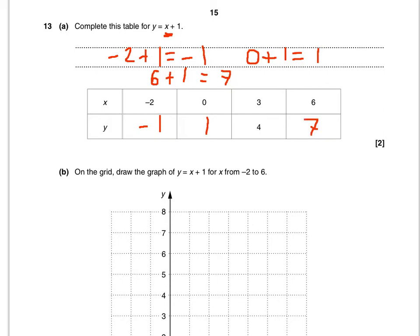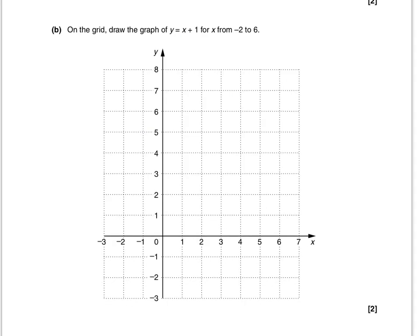Right, part b. On the grid, draw the graph of y equals x plus 1 for x from minus 2 to 6. So here we've been given our grid.